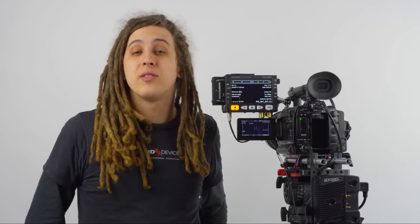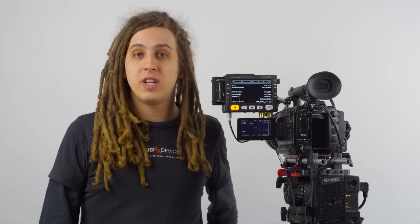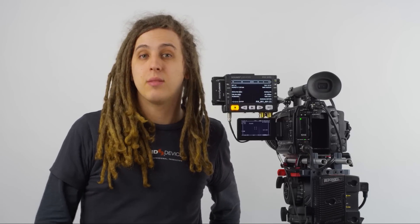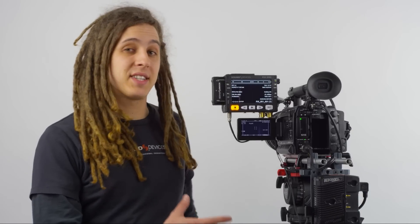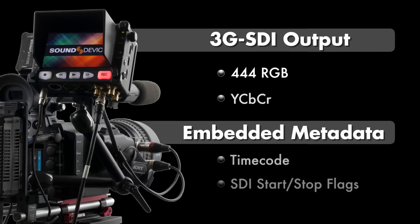Hi, this is Jesse from Sound Devices. Today I have with me a Sony F3 and a PIX240i production video recorder. The PIX240i has the ability to record ProRes 4444 video files from any 3G SDI source. It's an excellent companion with the Sony F3 because the F3 has a 3G SDI output that can output 444 RGB or YCBCR video.